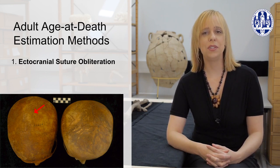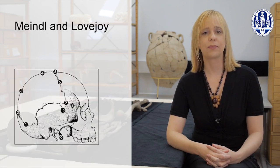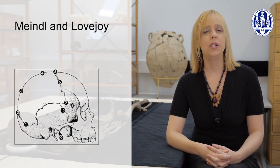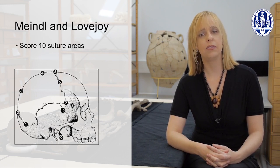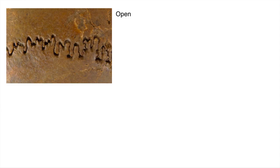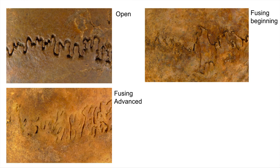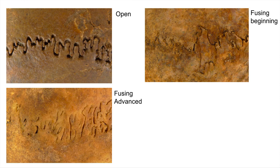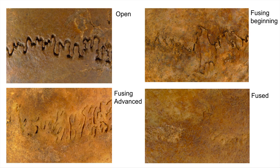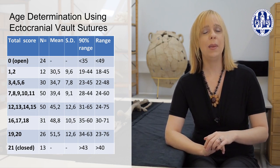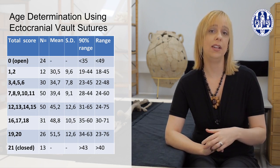The most common method used today was developed by Meindl and Lovejoy. They developed a method that scored ten separate suture areas on a scale from zero to three. Zero equals no cranial suture closure; one equals minimal closure; two equals significant closure, more than 50% of the area; and three equals complete suture closure, where the suture line is completely obliterated. Within one cranium, some sutures may exist at closure levels of zero or one and others at two or three — and this is normal. One then adds up the scores and compares that cumulative score to the tables provided by Meindl and Lovejoy.